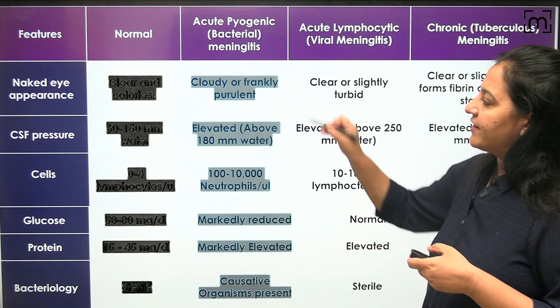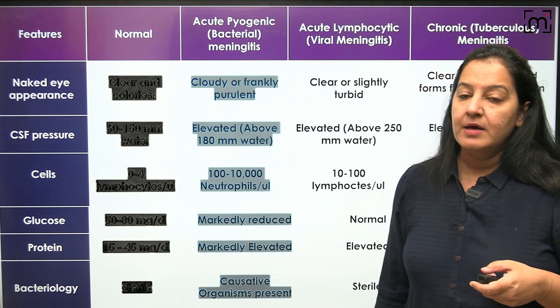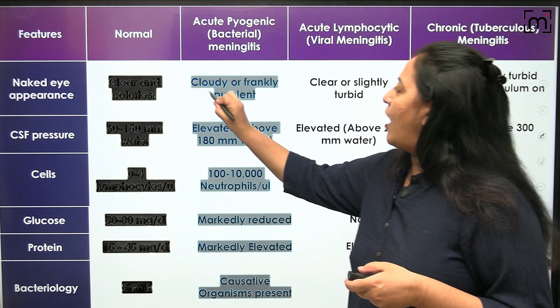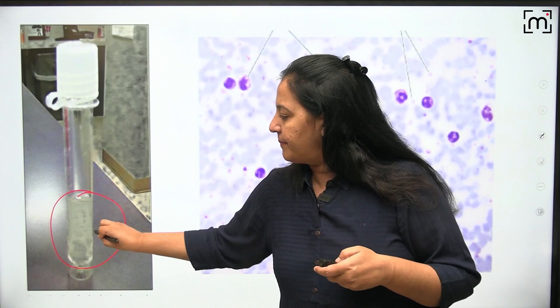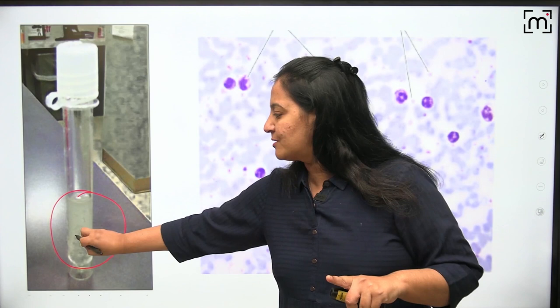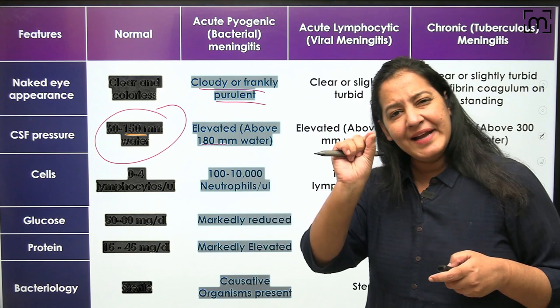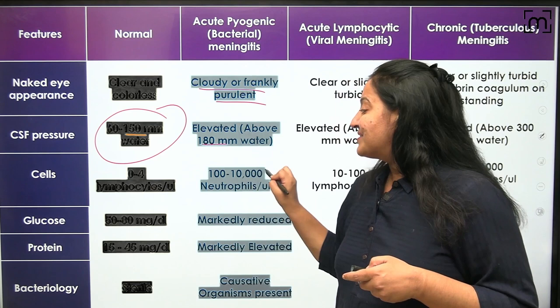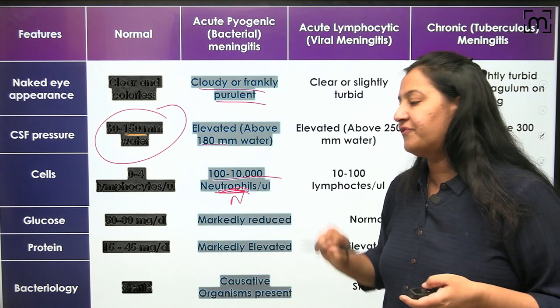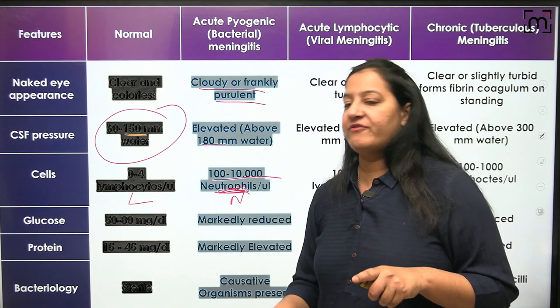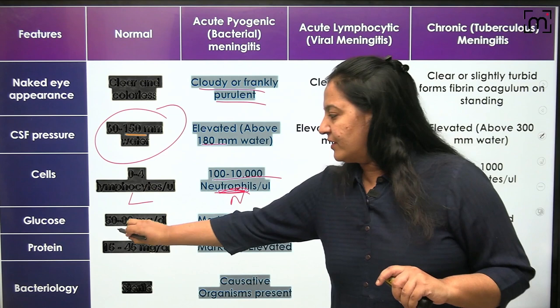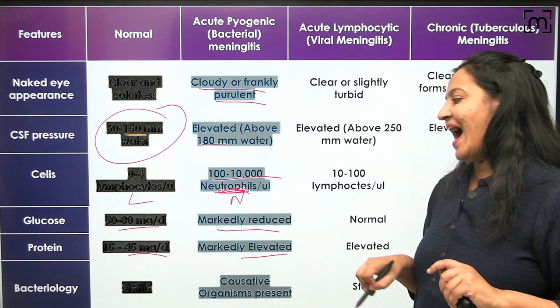The CSF becomes cloudy and purulent — not clear like normal CSF. Pressure is mildly increased up to 180. The most important finding: neutrophils are present, 100 to 10,000 per microliter. Normal CSF has no neutrophils at all. Glucose is markedly reduced and protein is markedly elevated.